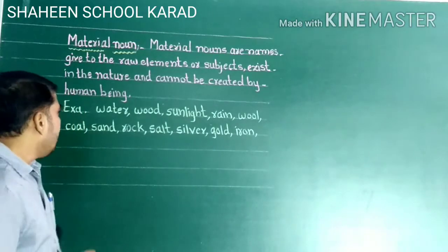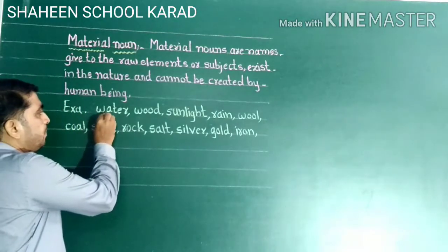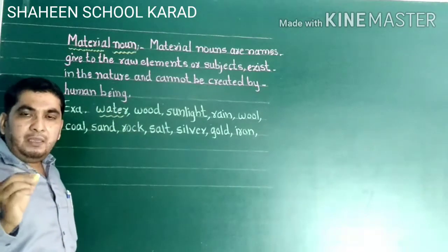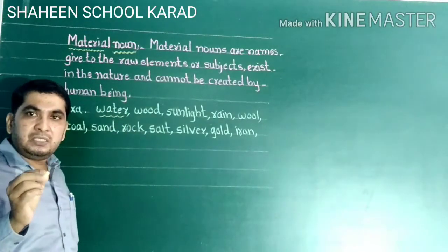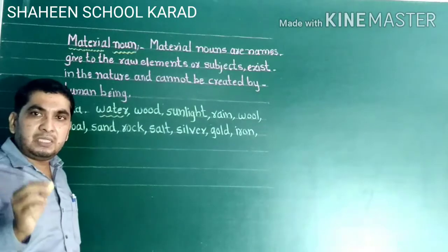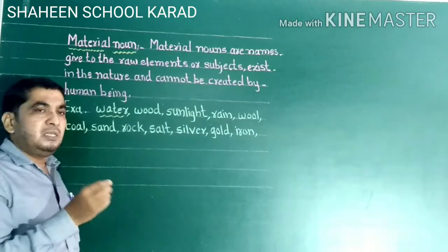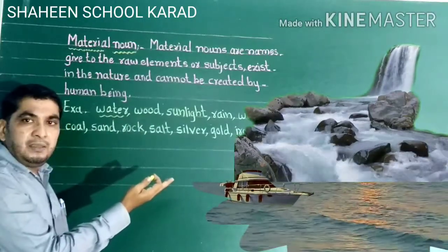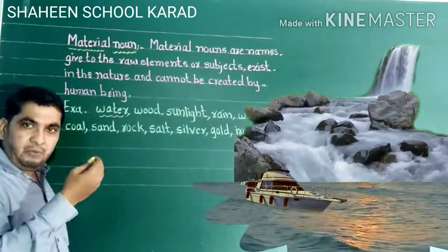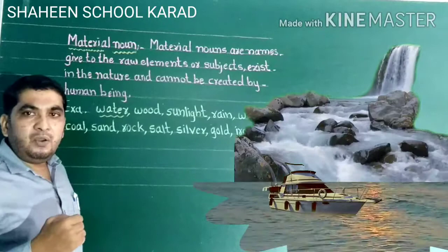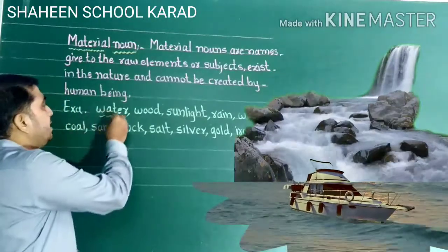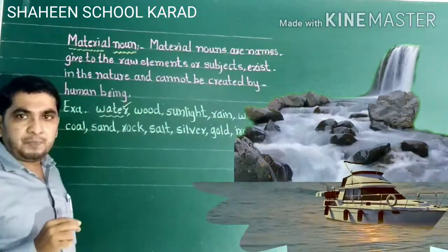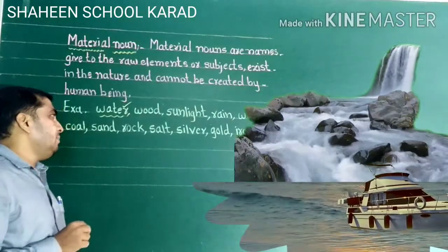For example, water is a material noun — it is called water, and it exists in nature. The next example is wood, which is also a material noun found in nature.